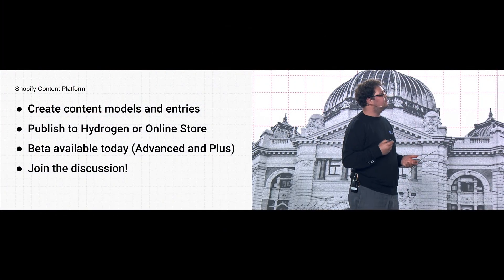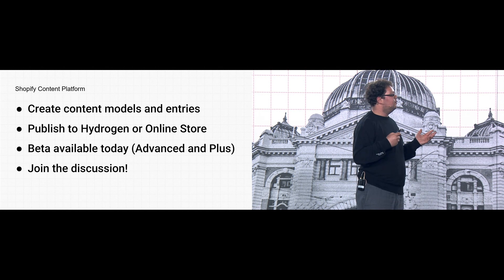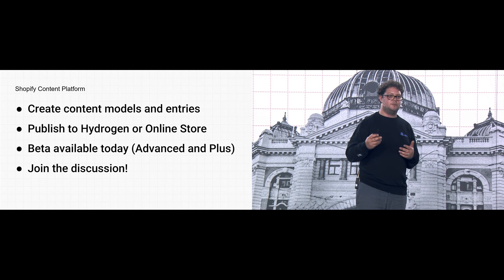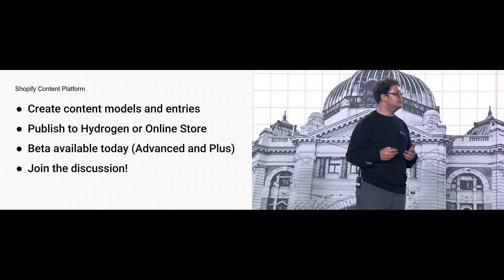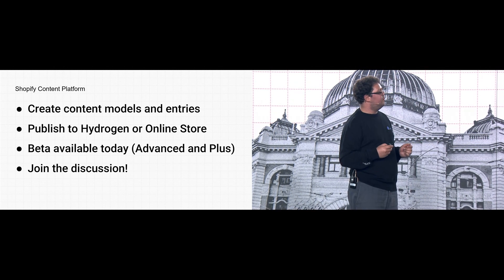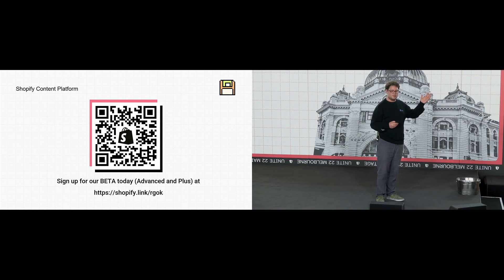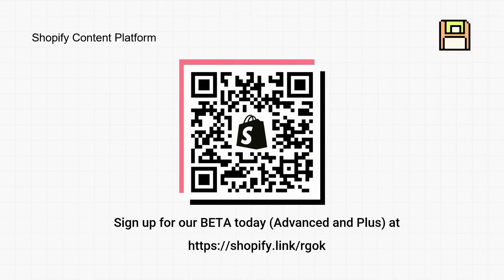This will all be possible natively within the Shopify admin — no custom apps needed — for Advanced and Plus merchants. We also want to allow you to publish to both Hydrogen and regular Liquid storefronts, maintaining feature parity between both approaches. The beta is available today, and we really want you to join the discussion. Please scan this QR code to find a form where you can apply for the beta.